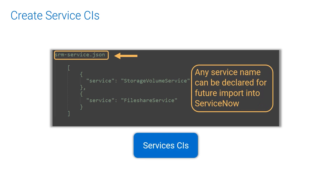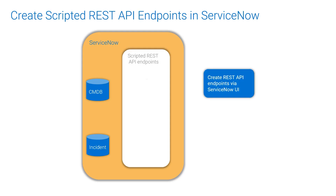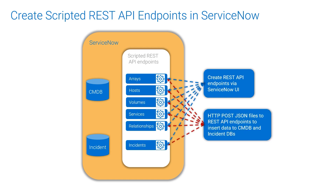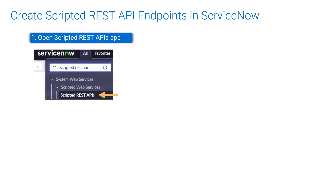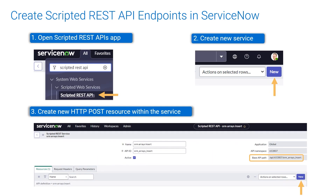Service CI names are manually inserted into the JSON files. Let's see the procedure to insert data into ServiceNow CMDB. First, we create scripted REST API endpoints in ServiceNow. Then we execute curl commands, which result in data insert into the CMDB. To create the endpoints, open the scripted REST API web app.